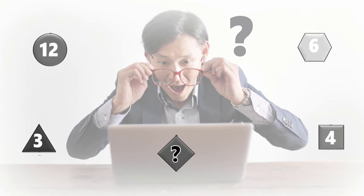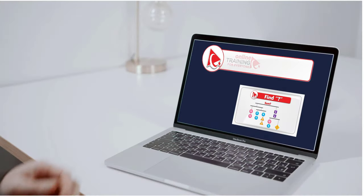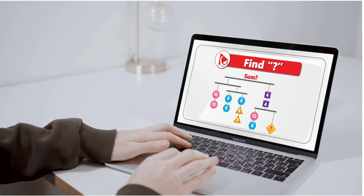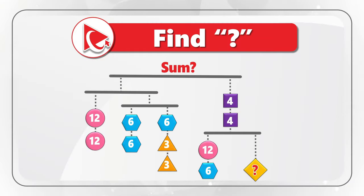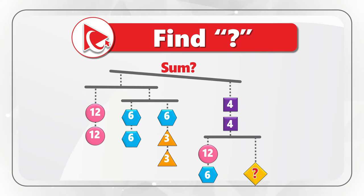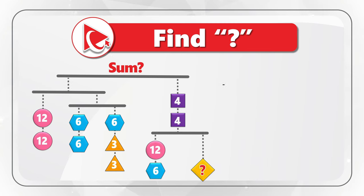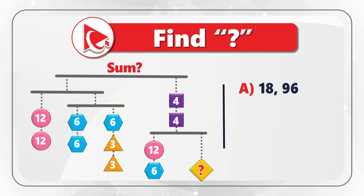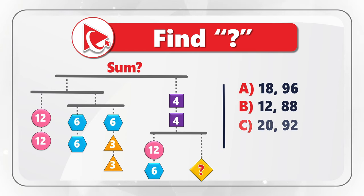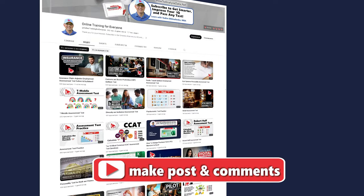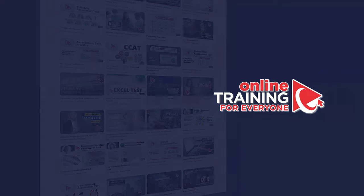Now I have a practice question for you. I'm not going to reveal the solution — instead I'm asking you to solve the challenge and post your answer in comments so I can give you feedback. You're presented with a scale which consists of multiple shapes. The scale remains in balance and you need to calculate the missing value of the diamond as well as the total sum. Choices are: A) 18 and 96, B) 12 and 88, C) 20 and 92, and D) 19 and 94. Please post your answer, solution, and rationale in comments.